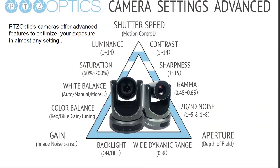Gamma is something you can use to offset the color ranges, and that is important for people using green screens. 2D and 3D noise cancellation and reduction allows us to do some really nice reduction of gain — reduction of pixelation in low light situations. So if you're in a low light situation, you really want to look at 2D and 3D noise cancellation.